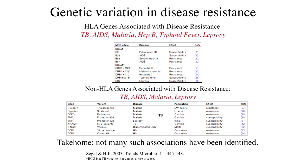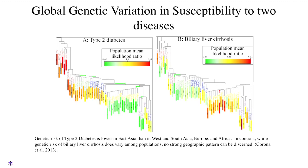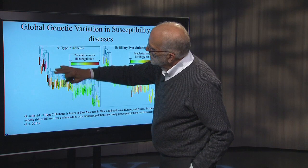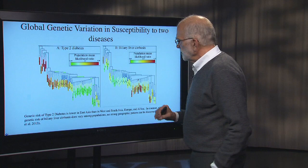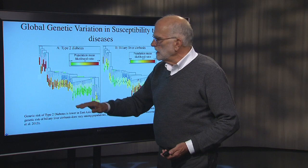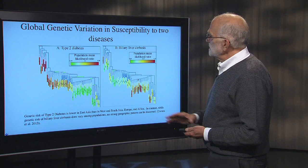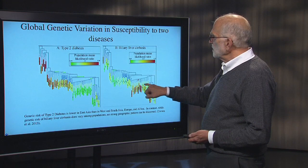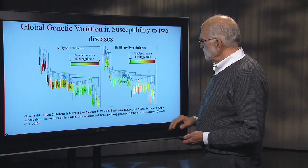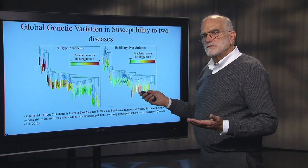If we look at global variation and susceptibility to two diseases — type 2 diabetes and biliary liver cirrhosis — we find interesting contrasts. For type 2 diabetes there is a very clear pattern: risk is much lower in East Asia than in West and South Asia, Europe, or Africa, suggesting the risk got lower and lower as we moved out of Africa across the planet. For biliary liver cirrhosis, it is a much more mixed picture — some populations in East Asia have very low risk, others very high, and it is similarly mixed in Africa and Europe. These things appear to have evolved separately with different patterns over the last 100,000 years.